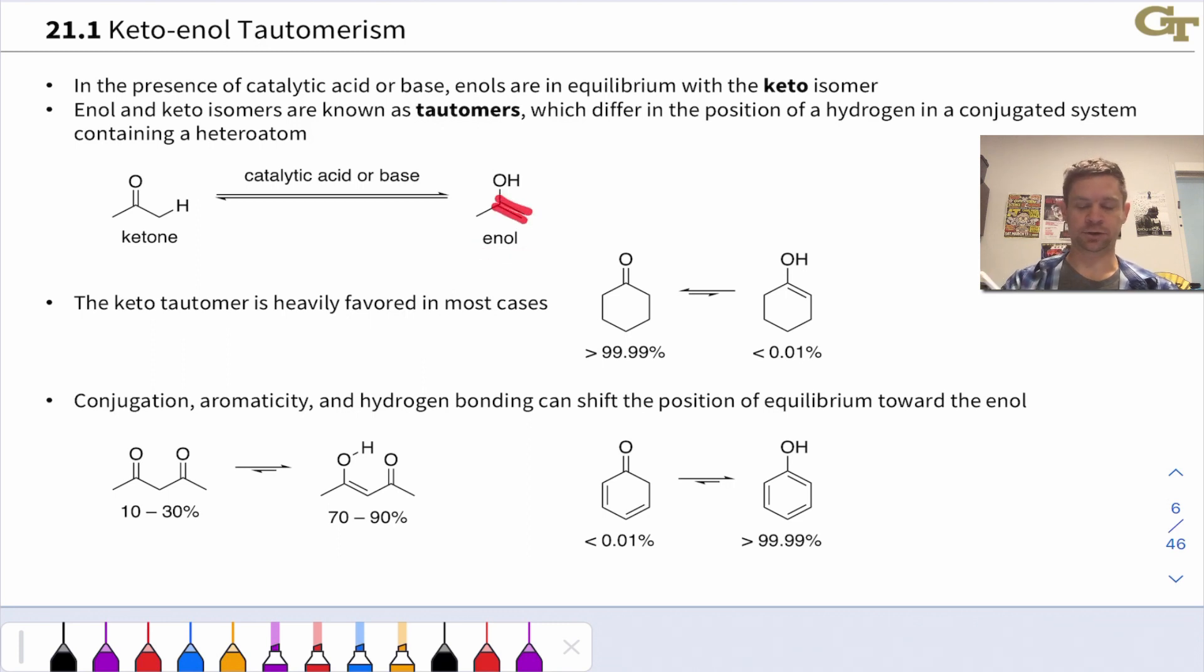It's called an enol because we have a carbon-carbon double bond (ene) and an OH group (ol). In the presence of catalytic acid or base, ketones and aldehydes in particular will rapidly equilibrate to form a mixture of the keto and enol forms.